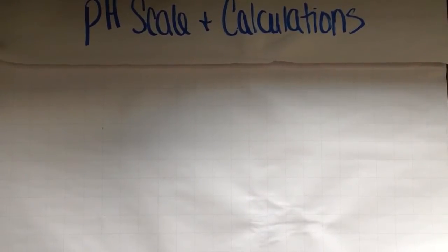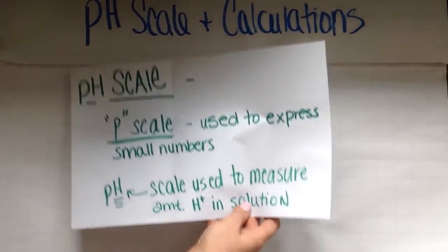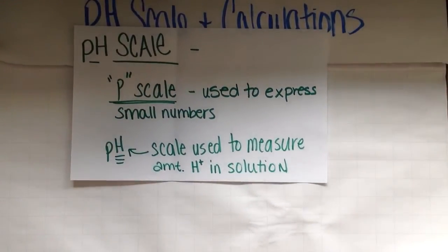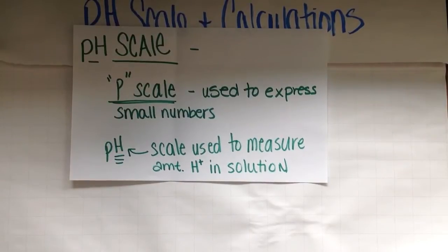This is a flip video about pH scale and calculations. The pH scale is a scale that we use to measure the amount of H plus in a solution. The more H plus you have in the solution, the more acidic the solution is.